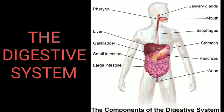Now let's learn about the digestive system. The digestive system consists of the alimentary canal and digestive glands. Parts of the alimentary canal: mouth, pharynx, esophagus, stomach, small intestine, large intestine, rectum and anus. Digestive glands include the salivary glands, liver and pancreas. The length of the alimentary canal is about 9 meters.